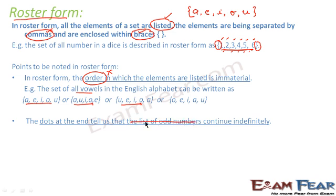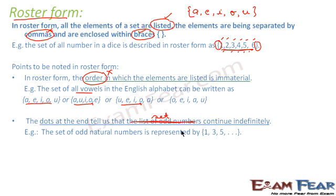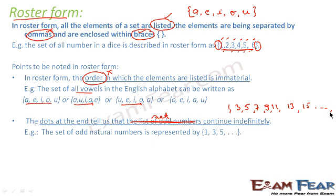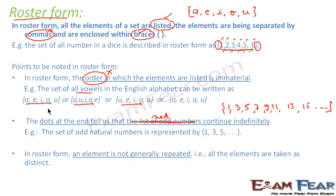Similarly, three dots at the end tell us that the set continues infinitely. For example, when we say the set of all natural numbers, we write 1, 3, 5, dot dot dot — meaning it continues infinitely as 1, 3, 5, 7, 9, 11, 13, 15 and so on. This is how we represent an infinite set — by putting three dots at the end.